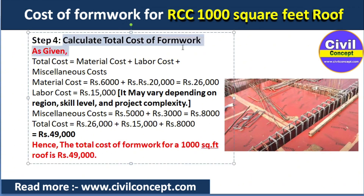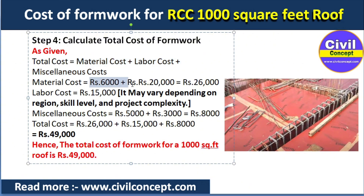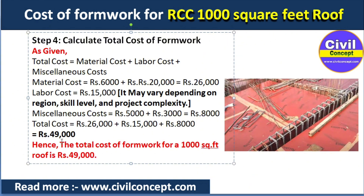In step number four we calculate the total cost of formwork. Total cost equals material cost plus labor cost plus miscellaneous cost. Material cost is 26,000 rupees, labor cost is 15,000 rupees, and miscellaneous cost is 8,000 rupees. Adding all these gives 49,000 rupees for a 1000 square feet roof.